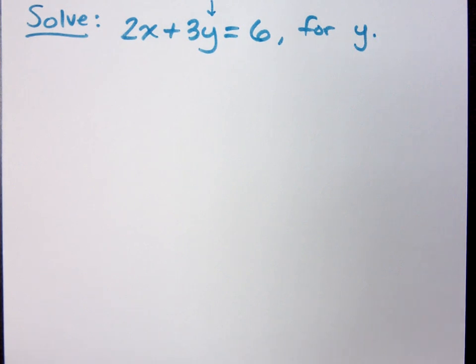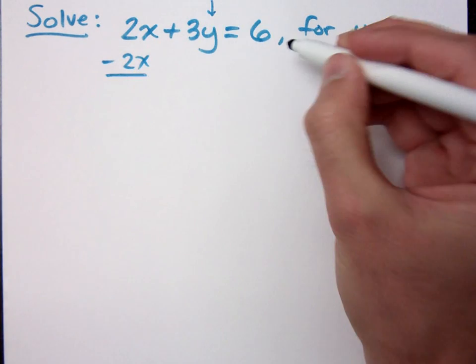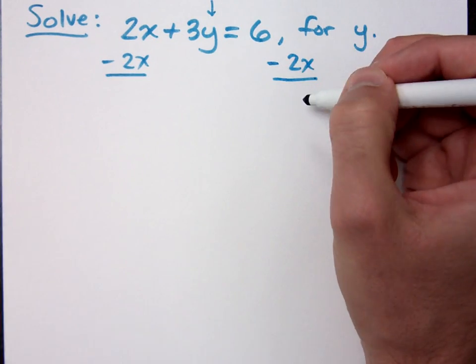If you are not connected to the y, you need to go bye-bye. How do I do that? Move the 2x to the other side, right? So if I subtract 2x, because the 2x is not directly connected to the y.